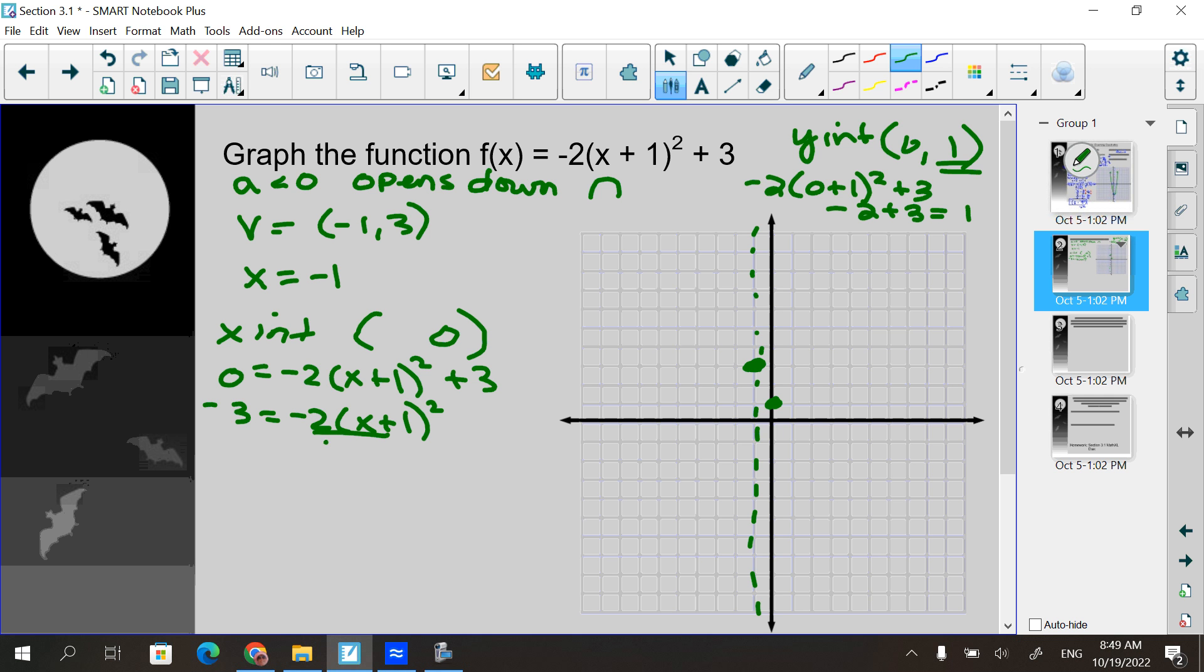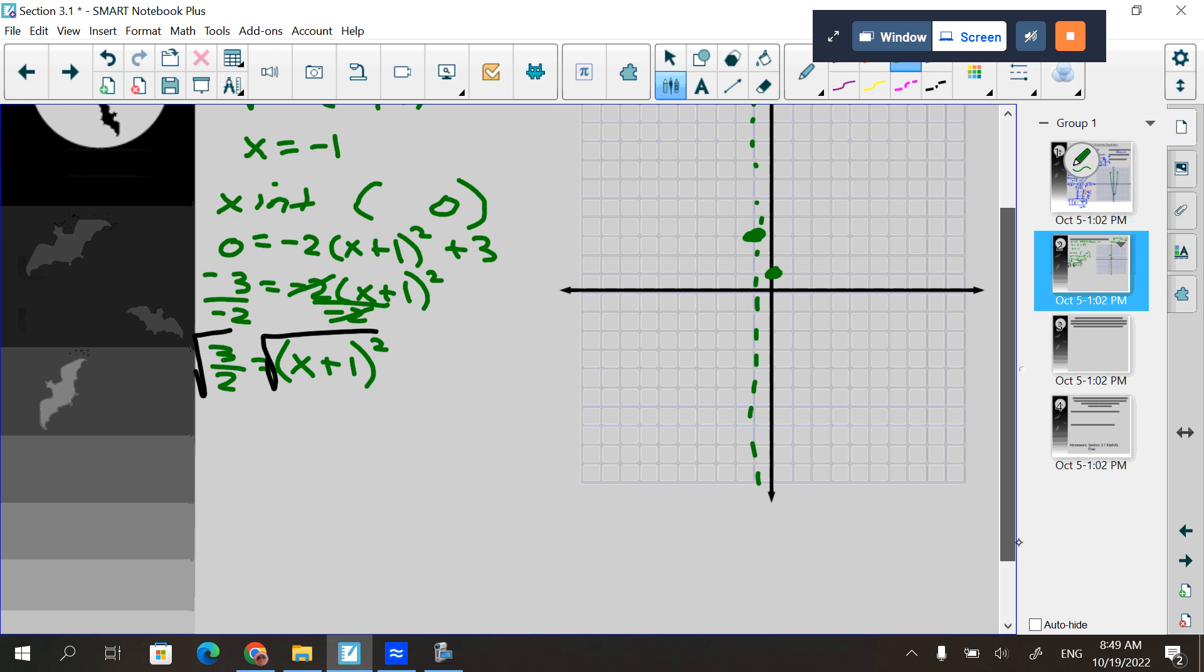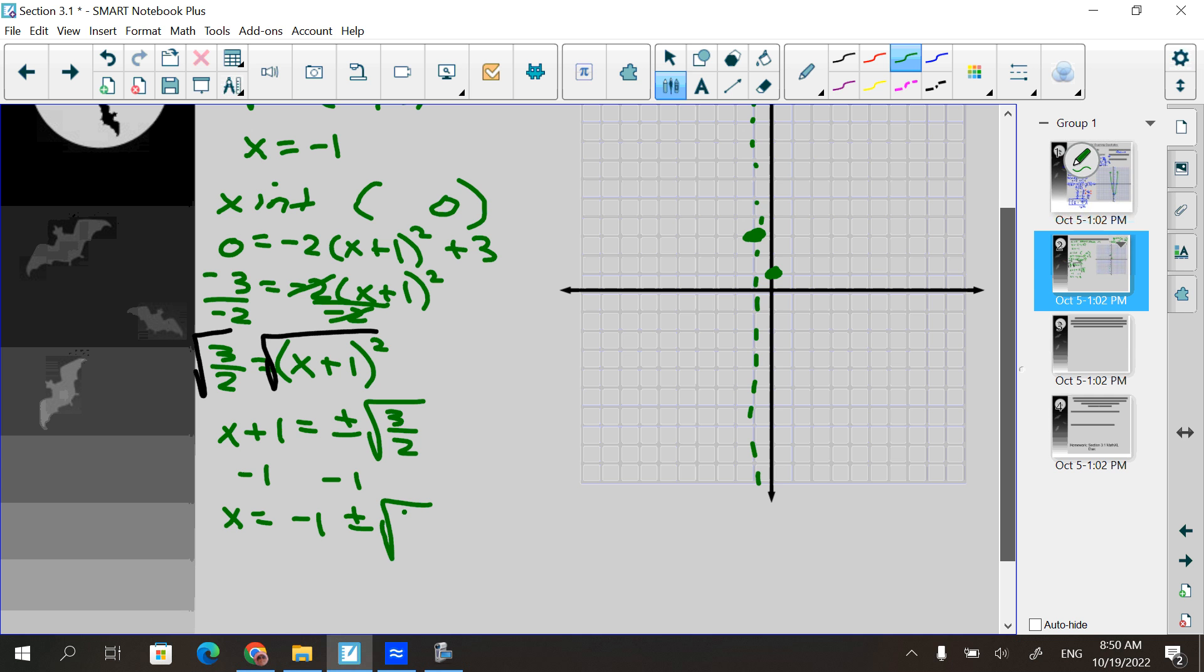Next, I could divide both sides by that negative 2. So 3 halves or 1.5 if you prefer equals X plus 1 squared. Then from here, I can take the square root of both sides. But when I take the square root of both sides, I have to remember the plus or minus. So that means that I have X plus 1 equals plus or minus the square root of 3 halves. And then subtract 1 from both sides. So X equals negative 1 plus or minus the square root of 3 halves.